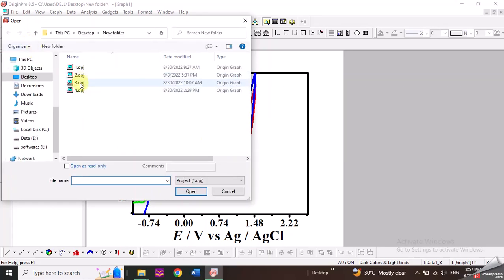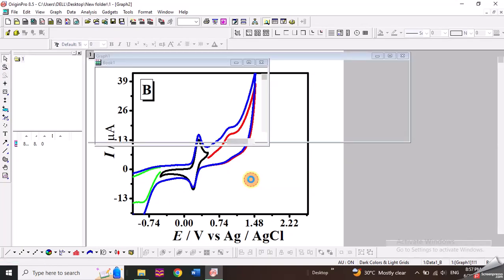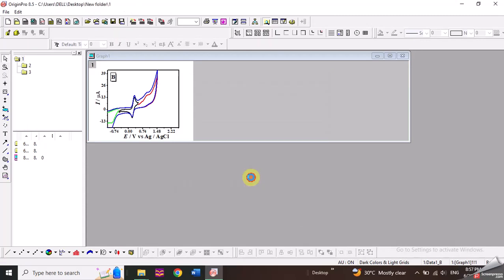Now I will select the other three graphs that I want to be in this project. So in this way, this dialog box will open. You can just click OK for that. So in this way, you can see all these three folders are created, which means these three graphs are also now present in this project.